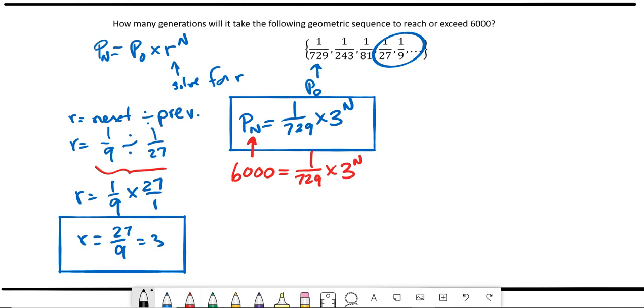Now our goal is to isolate the n. So we want to isolate 3 to the n, and that means get rid of this 1/729. If I multiply both sides of the equation by 729/1, we see that fractions when multiplied by the reciprocals give us 1, and we're left just with 3 to the n on the right-hand side. But we need to multiply this together.